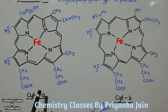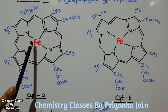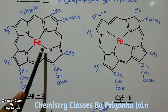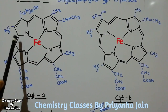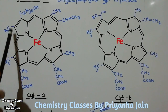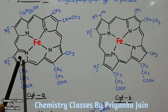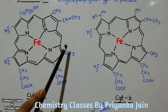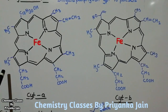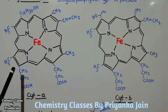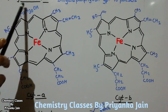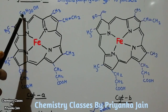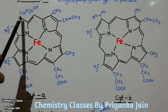Now we look at the structure of cytochrome a. In this structure there is an iron atom at the center, coordinated to the four nitrogen atoms of four pyrrole rings. These four pyrrole rings are attached to each other, forming a porphyrin ring. The various substituents are present at the periphery of this porphyrin ring, similar to hemoglobin. The key difference is that a formyl group is present in cytochrome a instead of the -CH=CH₂ group found in hemoglobin.